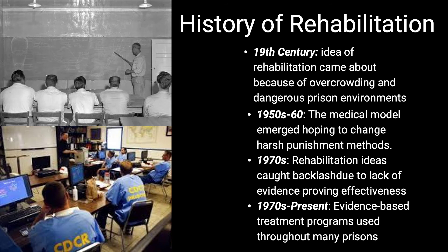Now I'll talk about the history of rehabilitation. The idea of rehabilitation came about in the late 19th century when state prisons were becoming overcrowded and dangerous for inmates. This reformation brought individual treatment programs for prisoners where they could work to better themselves. The medical treatment model emerged throughout the 1950s and 60s, with the goal of changing the harsh punishment inmates were previously receiving, finding that harsh labor and physical punishment were not changing behavior, and pushing to focus on why the crime was committed rather than the crime itself. Although rehabilitation efforts were discredited in the early 1970s, methods of rehabilitation are still heavily used across many state prisons today, altered to more evidence-based methods proven effective in lowering recidivism rates.